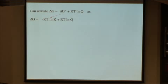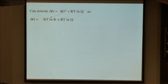All right, so we can rewrite the equation one more way. I just told you that ΔG° is equal to -RT ln K, so we can substitute into the expression -RT ln K.